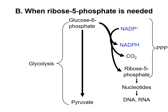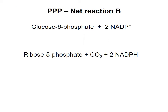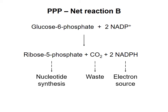Ribose 5-phosphate is the monosaccharide that is the basis for nucleotides. In the net reaction of this version, one carbon is oxidized to carbon dioxide for every glucose 6-phosphate molecule that enters the pathway, producing two NADPH molecules. The other five carbon atoms from the G6P molecule become ribose 5-phosphate, which is used for nucleotide synthesis. No carbons return to glycolysis, and no ATP is made. You are not responsible for memorizing this net reaction for the test.